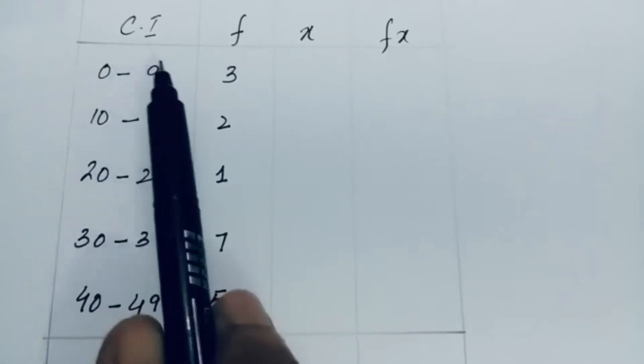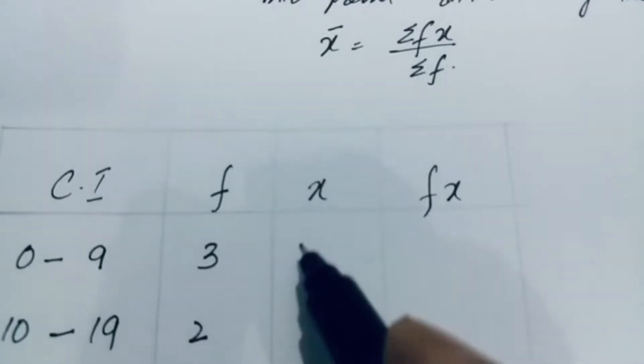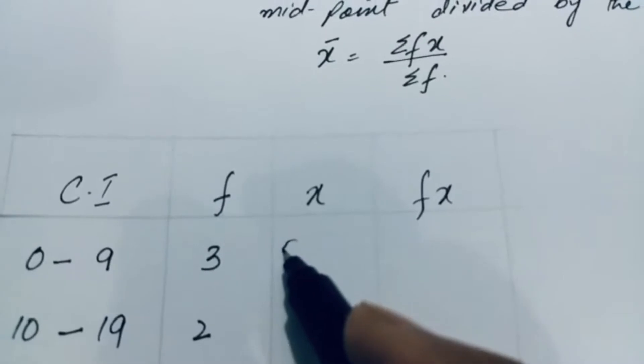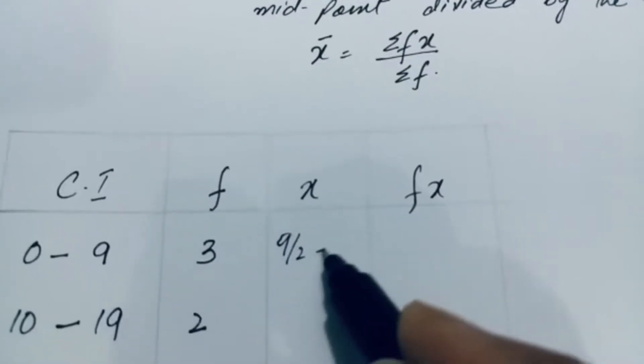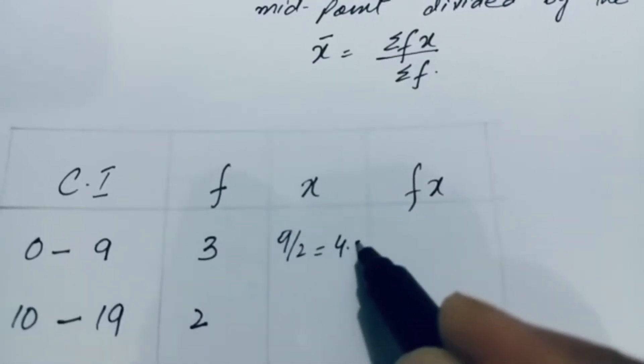For the first class, 0 plus 9 equals 9, divided by 2 gives 4.5 as the midpoint.